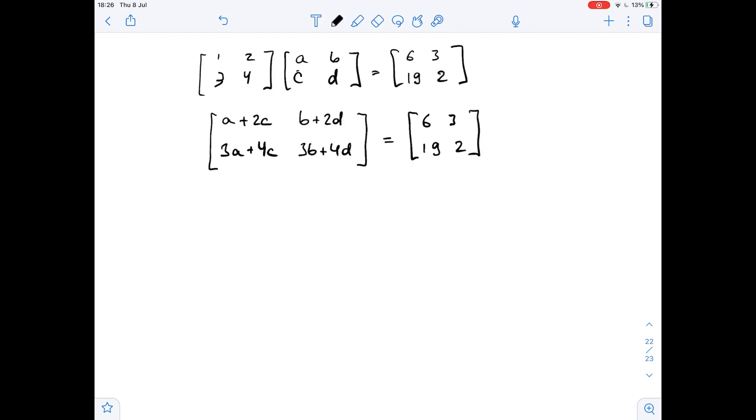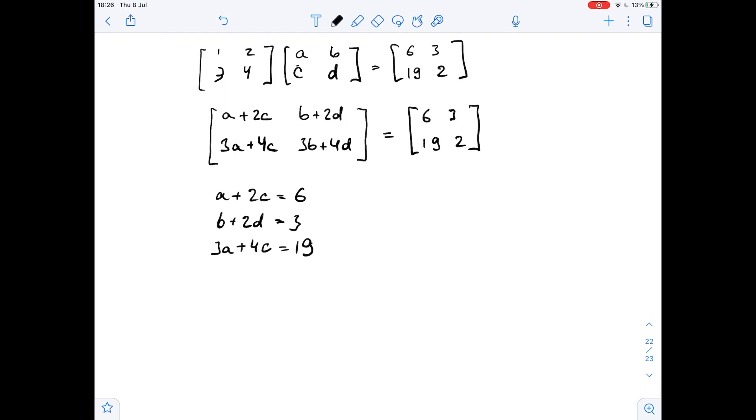Now, since these two matrices are equal, this means that their corresponding entries are equal. So we get that a plus 2c equals 6, b plus 2d equals 3, 3a plus 4c equals 19, and 3b plus 4d equals 2.